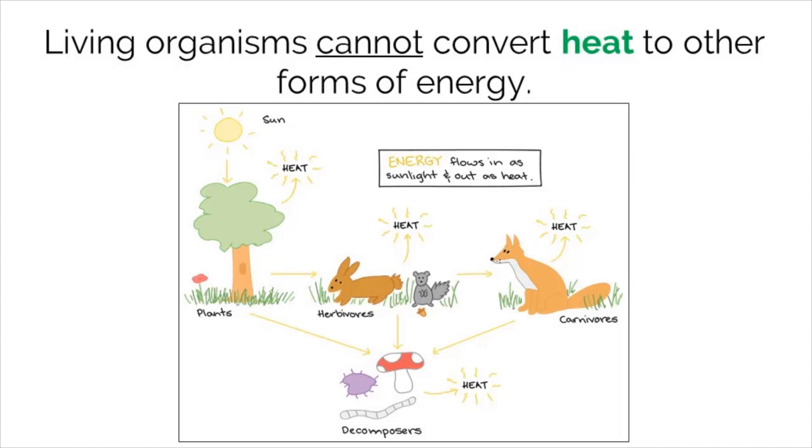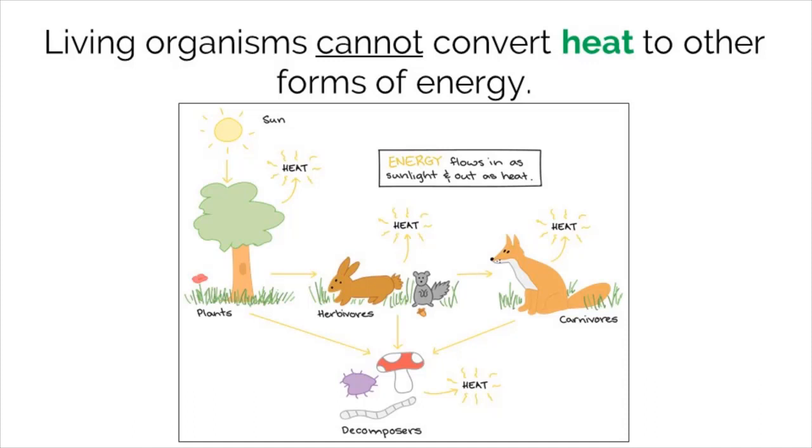As energy flows through an ecosystem, there is a large portion of it lost as heat through every step. Unfortunately, living organisms cannot convert heat into other forms of energy. This means once the energy is converted into heat, it can no longer be used in the ecosystem.